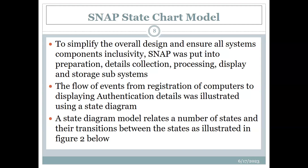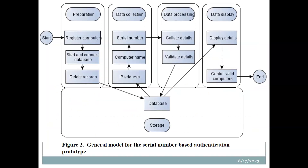The flow of events from registration of computers all the way to displaying authentication details was illustrated using a state diagram. In the preparation section, we have computers registered, the database started and connected, and records deleted. Then from the database, the IP address, computer name, and serial number are collected — this is the data collection subsystem. After collecting all these details, they are fed into an interface so we can validate the computers, and that is the data processing section.